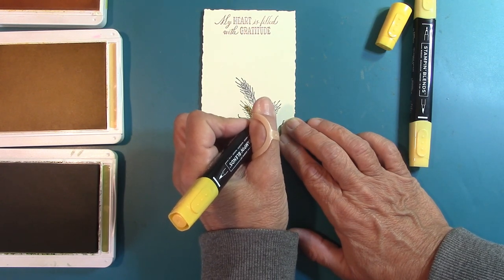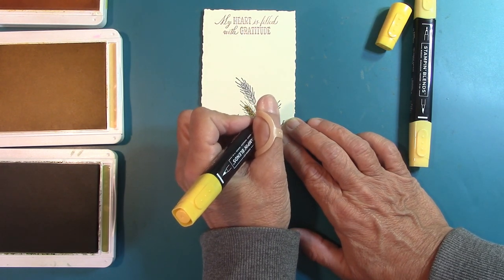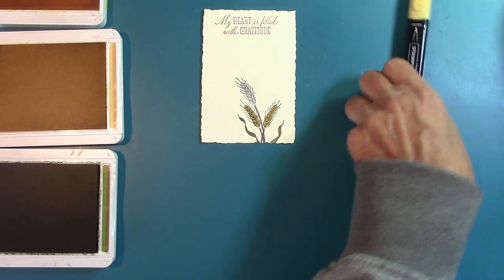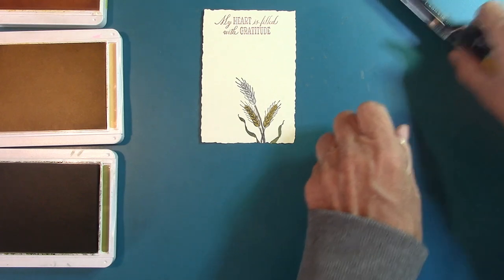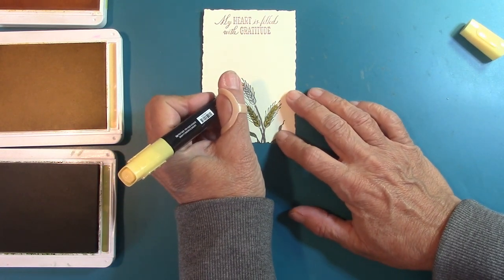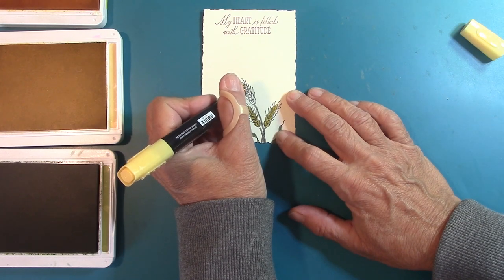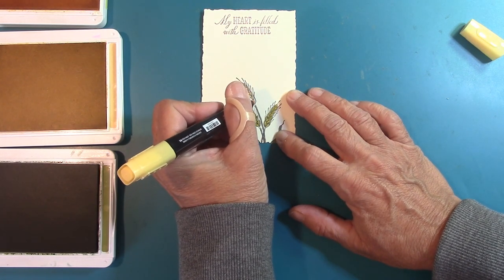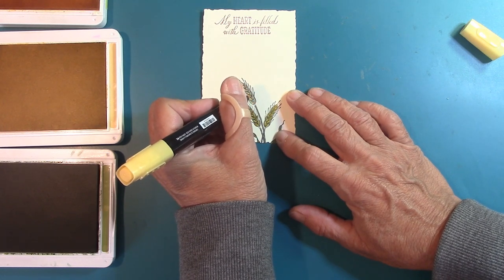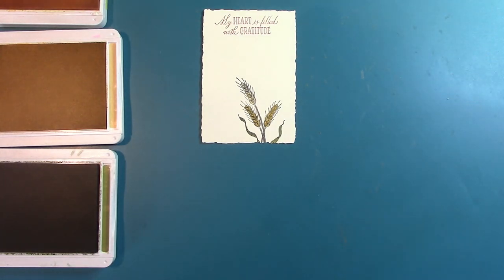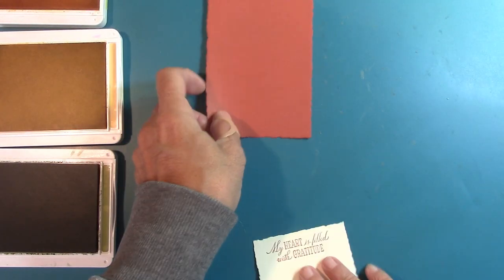Just like that. And then, the center one, we'll use our So Saffron. And this is just lighter, but it is the darker of the So Saffron. You know, they come into a two-pack with the light and the dark. And, like I said, there's a supply list underneath the video. Just click it. It'll take you right to my online store. This right here.